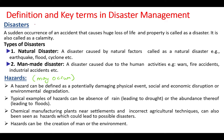Now let us discuss the definition of disaster. Disaster is basically formed by two words: 'dis' plus 'astro'. 'Dis' means bad, 'astro' means star, so it becomes 'bad star'. Bad star is something that brings bad luck, and disaster is named after this. Disaster is a sudden occurrence of an accident that causes huge loss of life and property. This is called a disaster and it's also called a calamity.